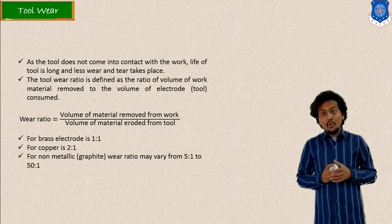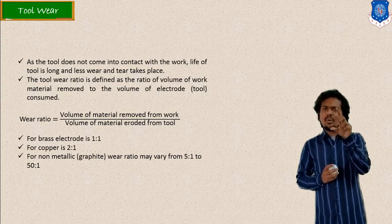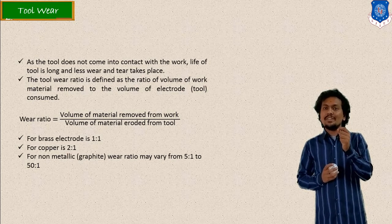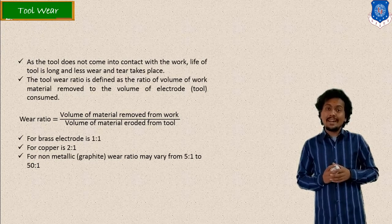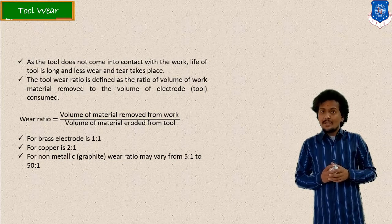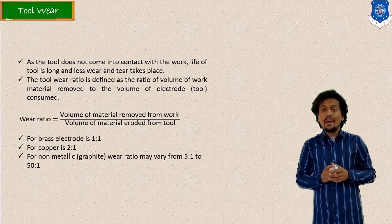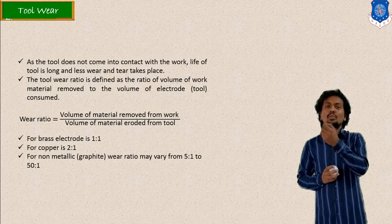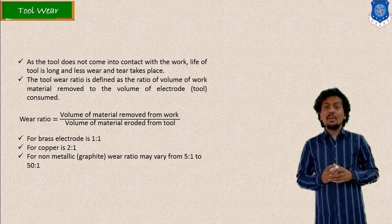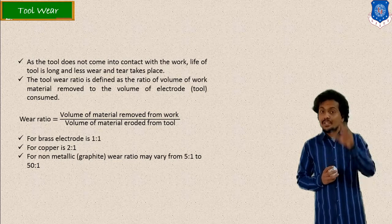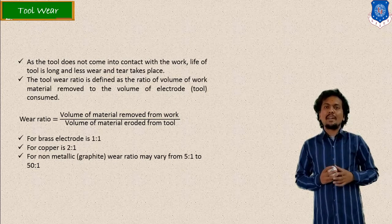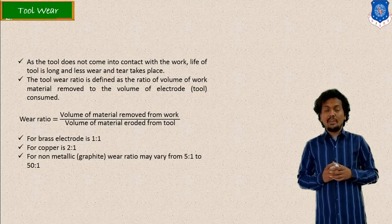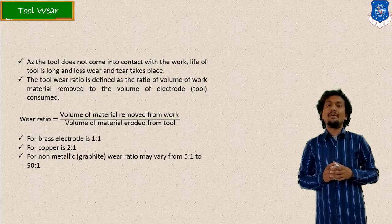Next, tool wear. The tool is the electrode used for spark generation — metallic or non-metallic tools are both used. Tool wear is defined as the ratio of volume removed from the workpiece to the volume removed from the tool material. There is no physical contact between tool and workpiece, but due to spark generation, a little amount of tool wear is present, though it is very less. For different electrode materials, the wear digit values are mentioned — for example, 2 to 1, 5 to 1, and so on.